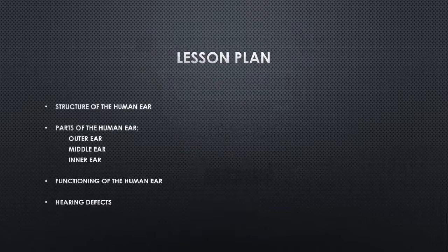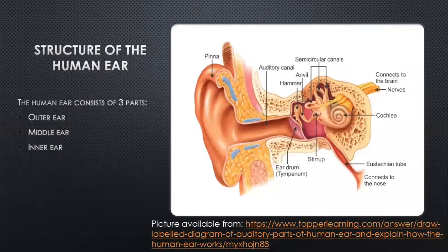Starting with our lesson plan, today we are going to discuss the structure of the human ear — the parts of the ear, which are the outer, the middle, and the inner ear. We are going to look at the functioning of the human ear, including balance and hearing, and last but not least, we are going to look at hearing defects.